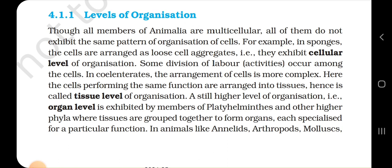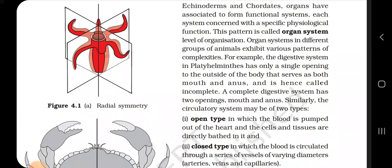A still higher level of organization, called organ level, is exhibited by members of Platyhelminthes and other higher phyla, where tissues are grouped together to form organs, each specialized for a particular function. In animals like Annelids, Arthropods, Molluscs, Echinoderms and Chordates, organs are associated to form a functional system, each concerned with a specific physiological function. This pattern is called organ system level of organization.